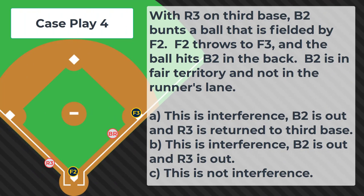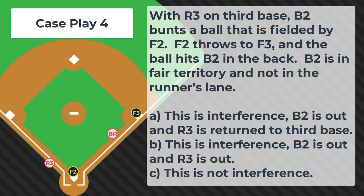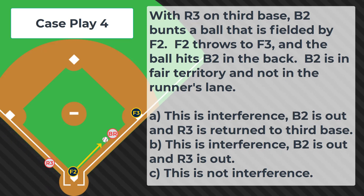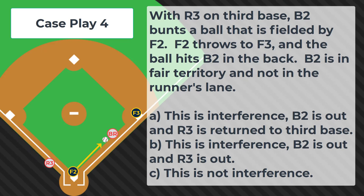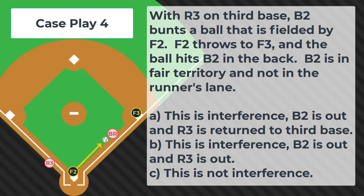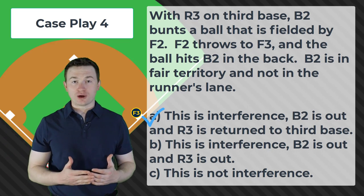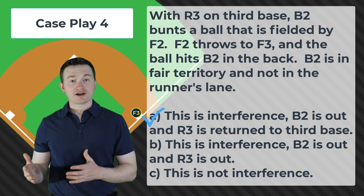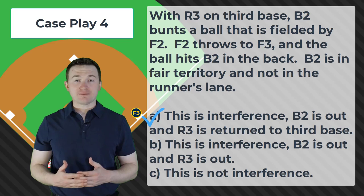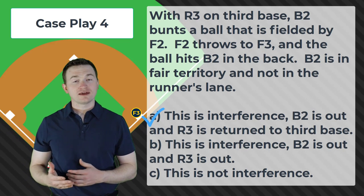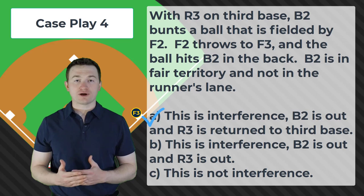Case play number four. With R3 on third base, B2 bunts a ball that is fielded by F2. F2 throws to F3 and the ball hits B2 in the back. B2 is in fair territory and not in the runner's lane. Is this A — interference, B2 is out and R3 is returned to third; B — interference, B2 is out and R3 is out; or C — this is not interference? The correct answer is A, this is runner's lane interference. We have a ball being thrown to first base by the catcher and the batter runner is not in the runner's lane. When the throw does not retire the runner, the batter runner will be out for violating the runner's lane rules and all runners will be returned to where they were at the time of pitch.